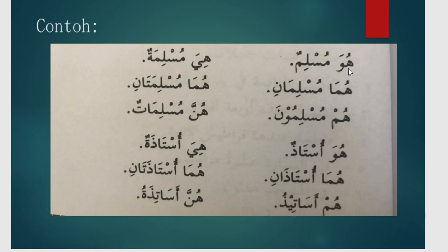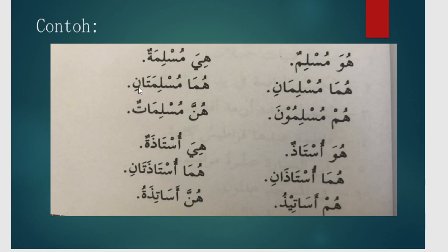Kita beralih ke contoh berikutnya. Hiya muslimatun — dia perempuan seorang muslimah. Huma muslimatani — mereka berdua adalah dua orang muslimah. Kemudian hunna muslimatun — mereka adalah para muslimah. Bentuk kalimat ini adalah untuk mu'annas.